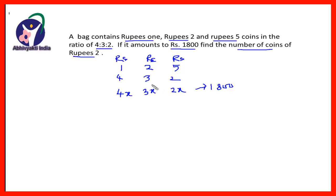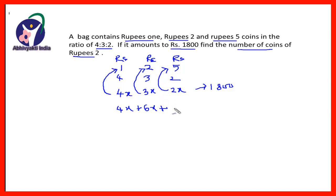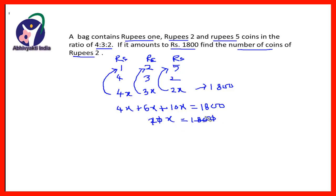Now, these are the number of coins — 4x, 3x and 2x. We will convert this into value: 4x (1 rupee coin) has value 4x, plus 3×2 gives value 6x, plus 2×5 gives value 10x. If you add these like terms, you get 20x = 1800, so the zeros cancel and x = 90.